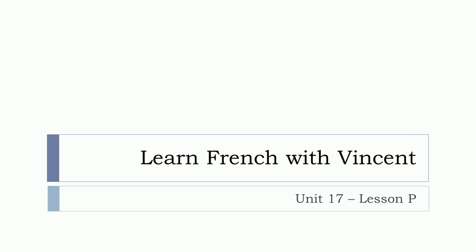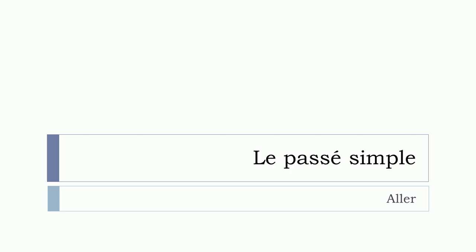Bonjour à tous and welcome to Learn French with Vincent. This is unité 17, leçon P. In this lesson we'll see together le verbe aller, and more precisely la forme du passé simple. And we can start right now.